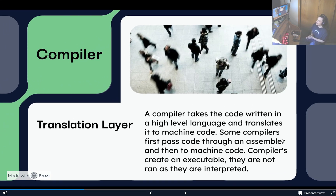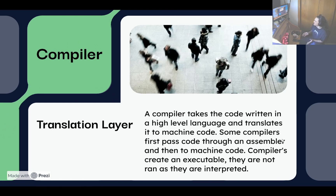So a compiler is a translation layer that translates your code into a language that your machine can understand. A compiler takes code written in a high-level language and translates it to machine code. Some compilers first pass code through an assembler and then to machine code. Compilers create an executable — they are not run as they are interpreted.